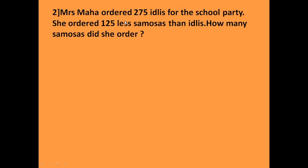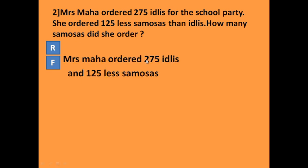Number 2: Mrs. Maha ordered 275 idlis for the school party. She ordered 125 fewer samosas than idlis. How many samosas did she order? We read the problem, then find the important information: Mrs. Maha ordered 275 idlis and 125 fewer samosas. We decide to subtract to find how many samosas she ordered.